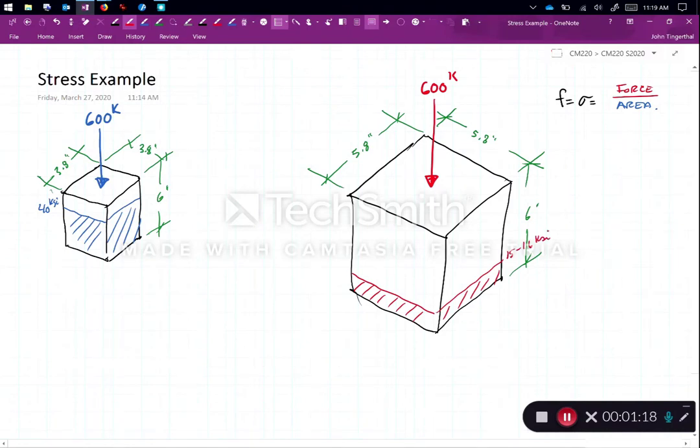So let's see how the math works out. This particular cube is 3.8 inches by 3.8 inches. So if we calculate the stress in this one, F is equal to sigma, two different symbols for the same thing, is equal to 600 kips divided by 3.8 inches times 3.8 inches. And when I do that math, I get 41.55 kips per inch squared.